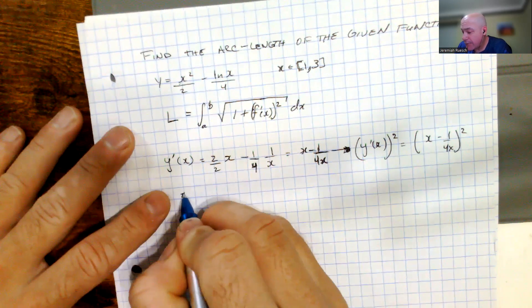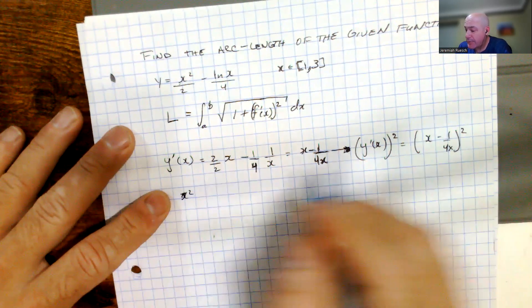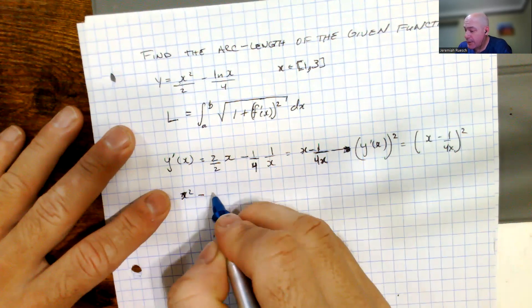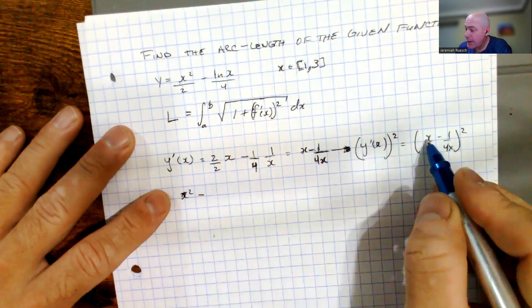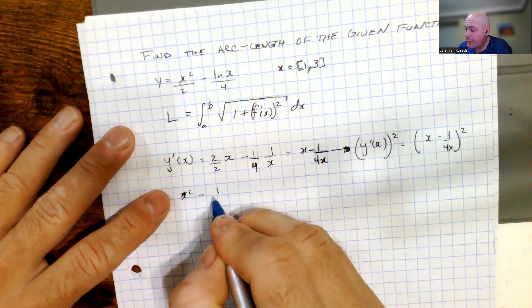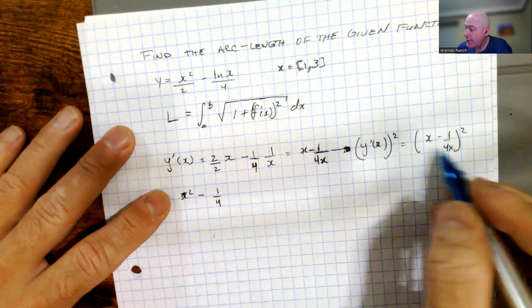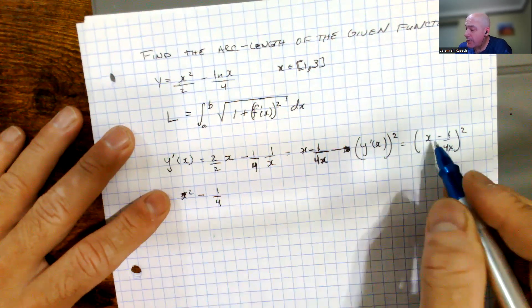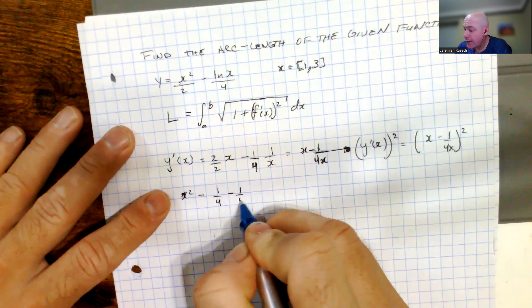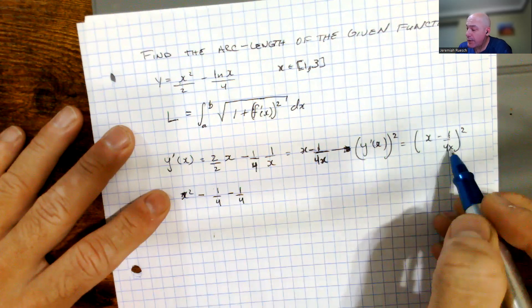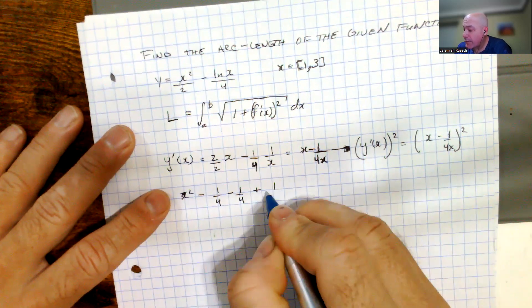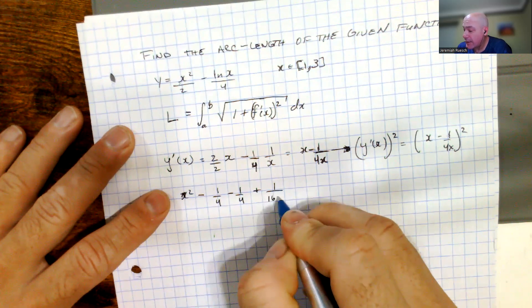So let's foil that out. We have x squared, multiplying x times x, if you can imagine two of them, minus there's going to be an x times 1 over 4x, so that's going to give us a 1 fourth, and then you're going to have another x times a minus 1 over 4x, so that's going to be a minus 1 fourth again, and then you're going to have a minus 1 fourth x times a minus 1 fourth x, so that's going to give us a plus 1 over 16x squared.